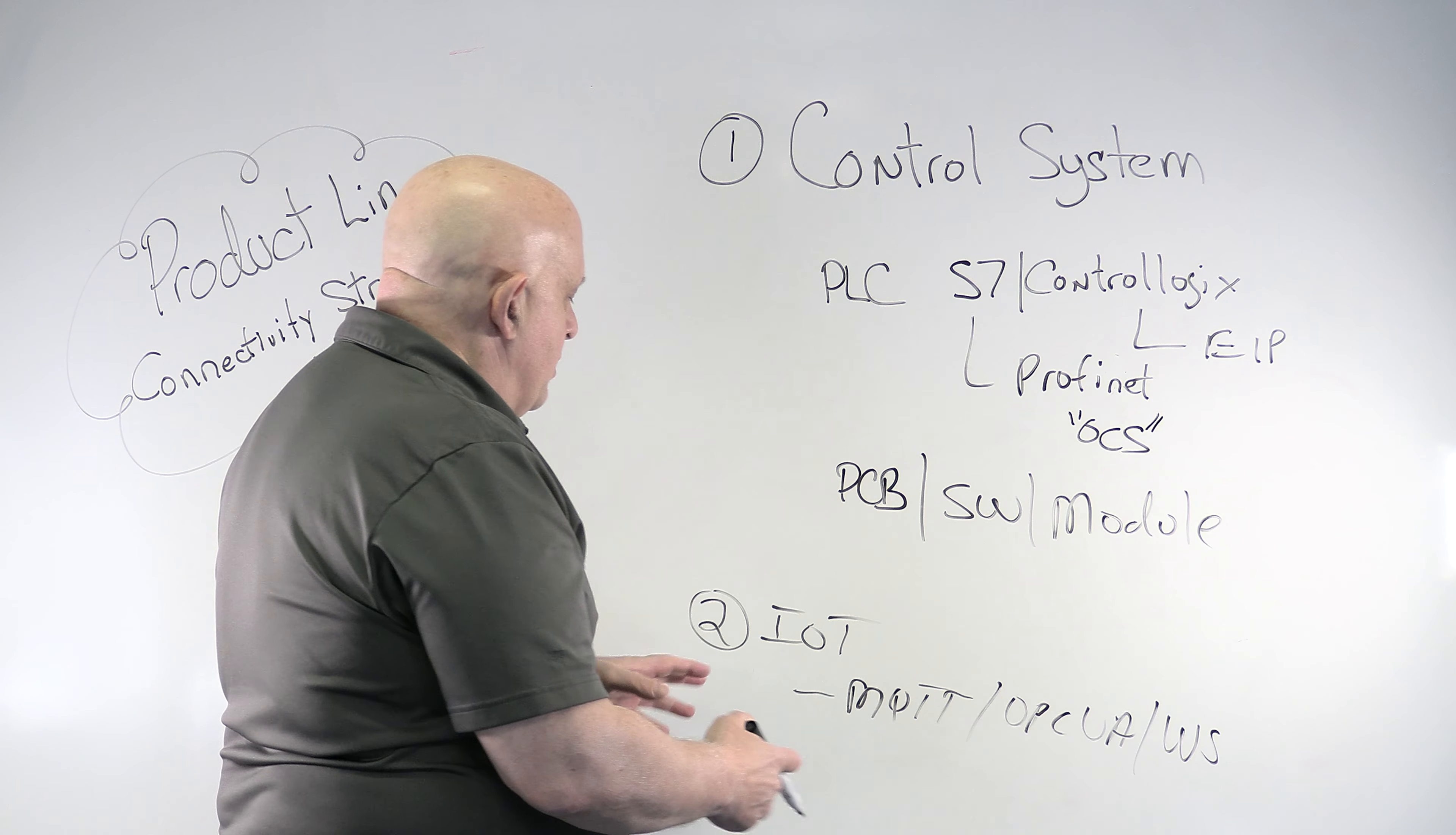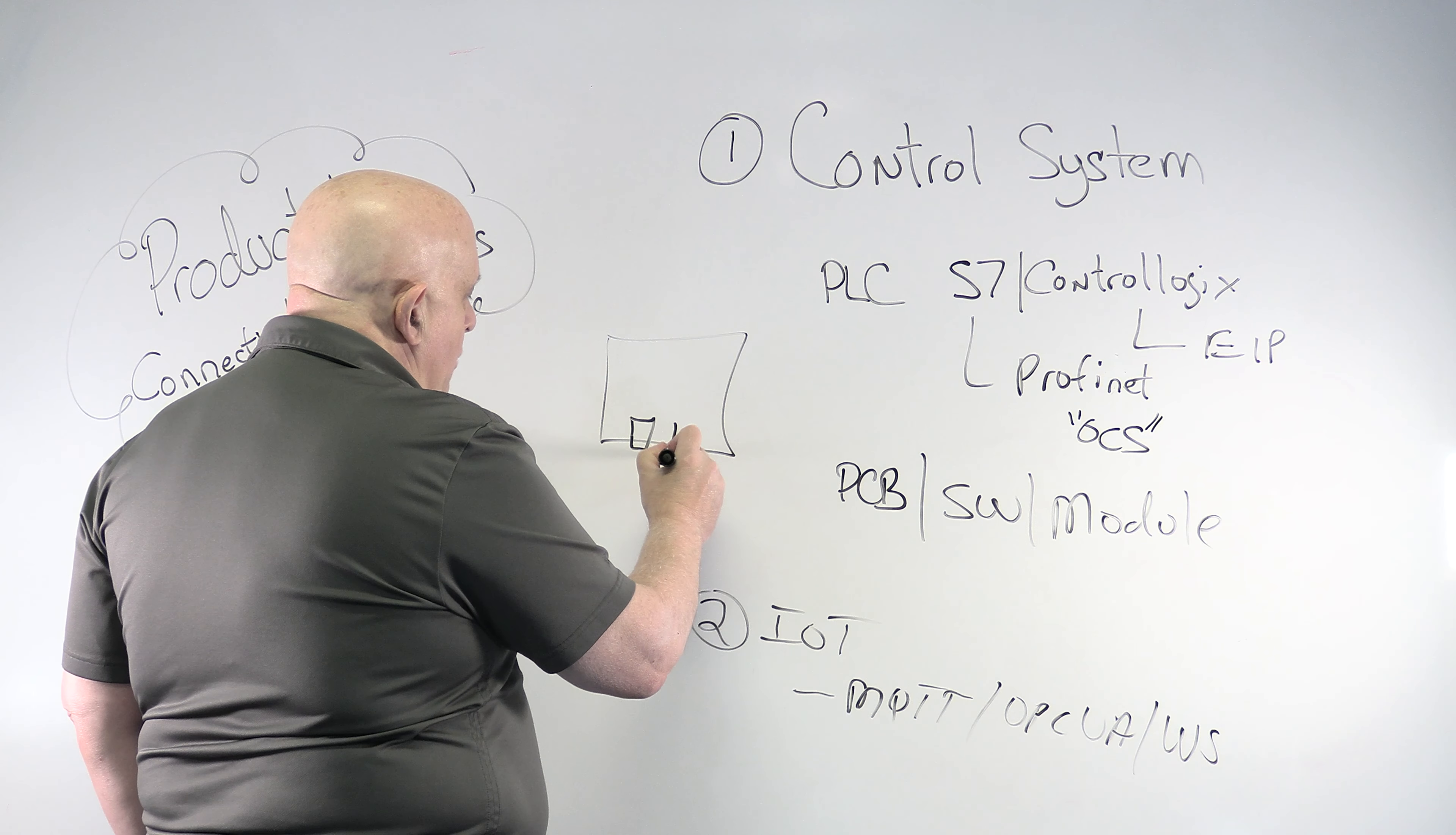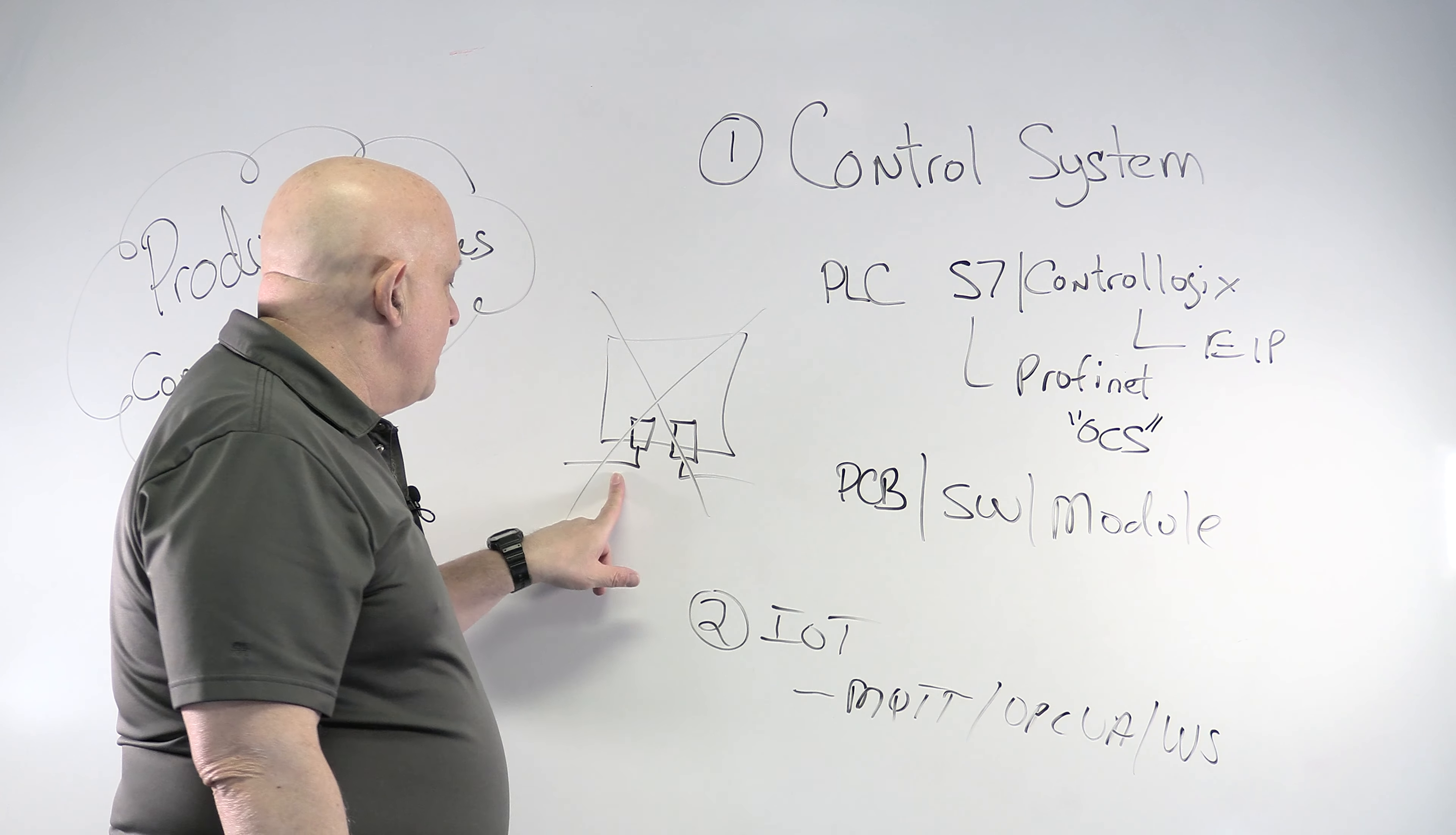The big thing that you don't want to do, you don't want to be in both. You don't want to be both part of the IT system and the control system at the same time. A lot of people are building these devices with two NICs in them. So that one NIC goes to the control system, another NIC goes to the IT system.